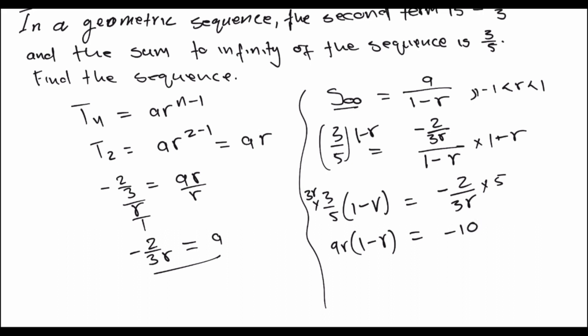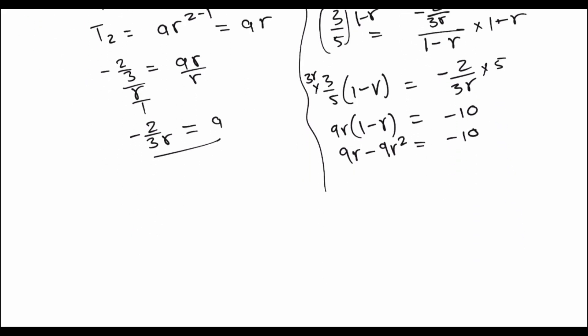We distribute the 9R and get 9R minus 9R squared equals negative 10. Transposing gives us negative 9R squared plus 9R plus 10 equals zero. Now we need to find the value of R, and we can use the quadratic formula to do so.